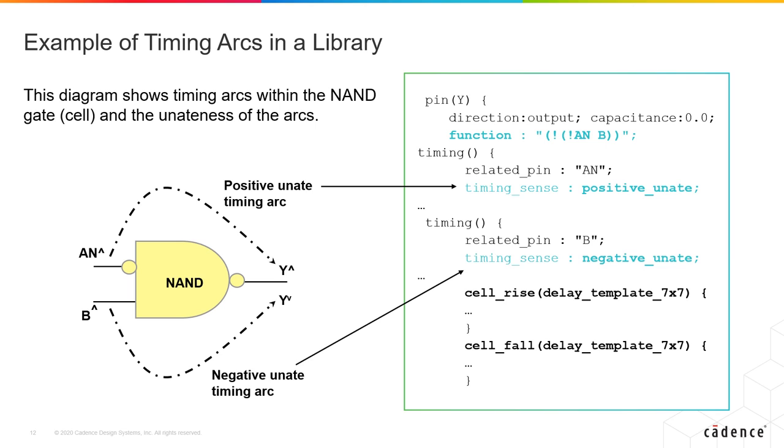The timing sense of a NAND gate for the IN pin is shown as positive u-nate and the B pin is shown as negative u-nate. Each related pin under the timing section of the output pin represents a timing arc.